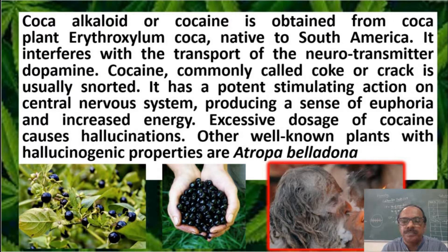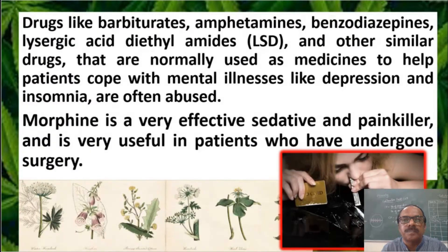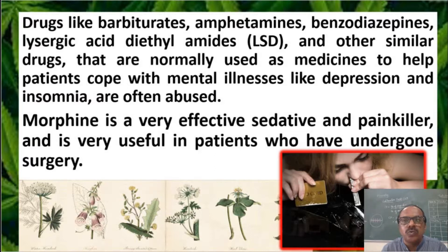Cocaine is usually snorted. Another plant commonly used to produce narcotic drugs is Atropa belladonna, shown on screen. Drugs like barbiturates and LSD — lysergic acid diethylamide — are similar to the narcotic drugs mentioned. They cause severe mental disorders because they are generally used to treat mental illnesses like depression and insomnia, but are often abused and misused by people.